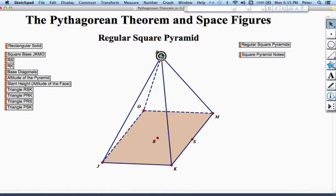And opposite that base is the vertex. So point P is the vertex of the pyramid and it lies directly above the center of the base. Now I know that point R is the center of the base because it's where the intersection of the base diagonals is. And the line stretching from the vertex to the center of the base is called the altitude of the pyramid. And it represents the true height of the pyramid.